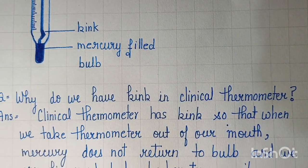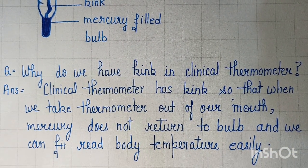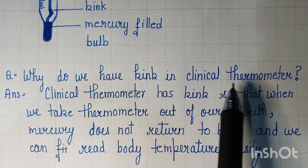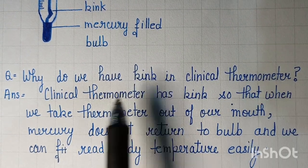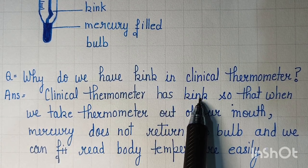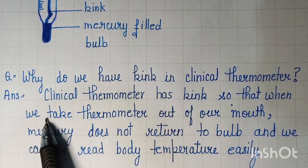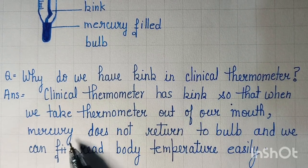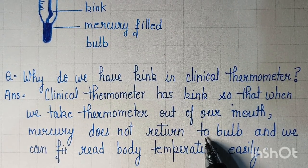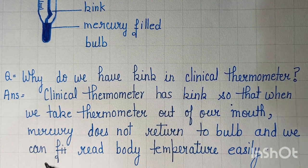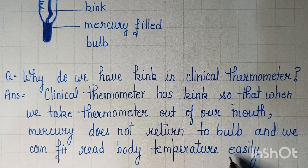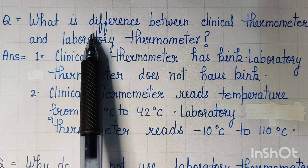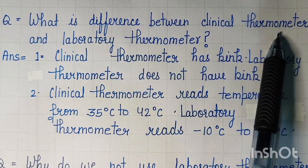Now we are going to discuss the important questions of this topic. Why do we have a kink in the clinical thermometer? The clinical thermometer has a kink so that when we take the thermometer out of our mouth, mercury does not return to the bulb and we can read the body temperature easily.